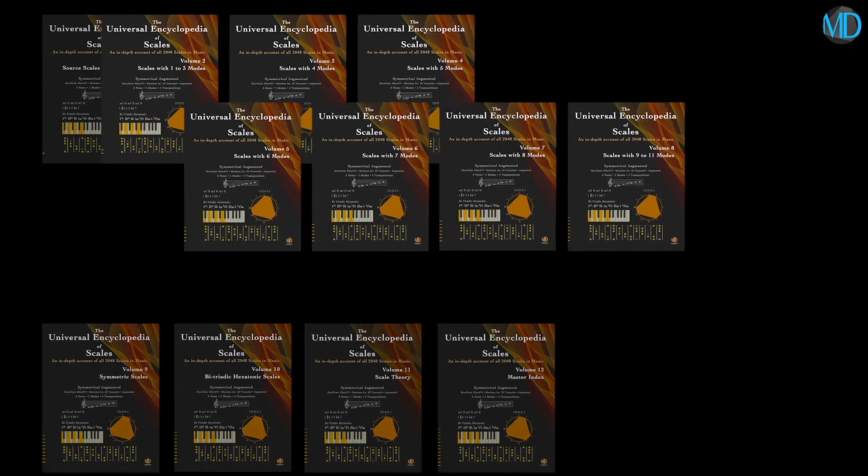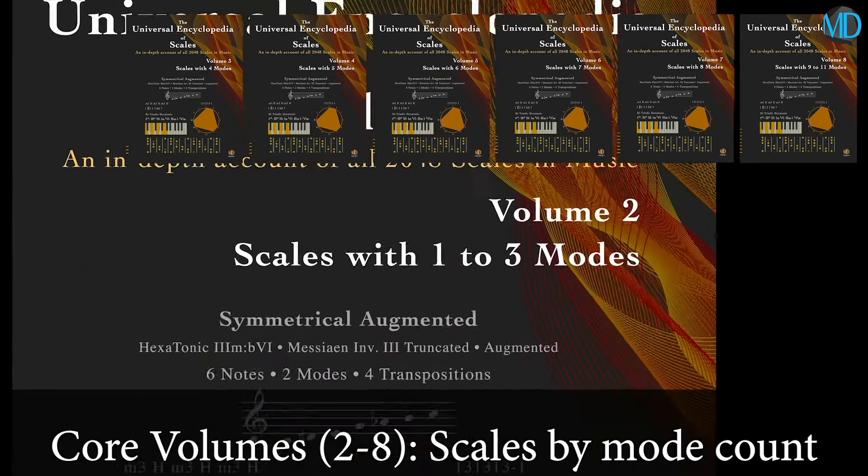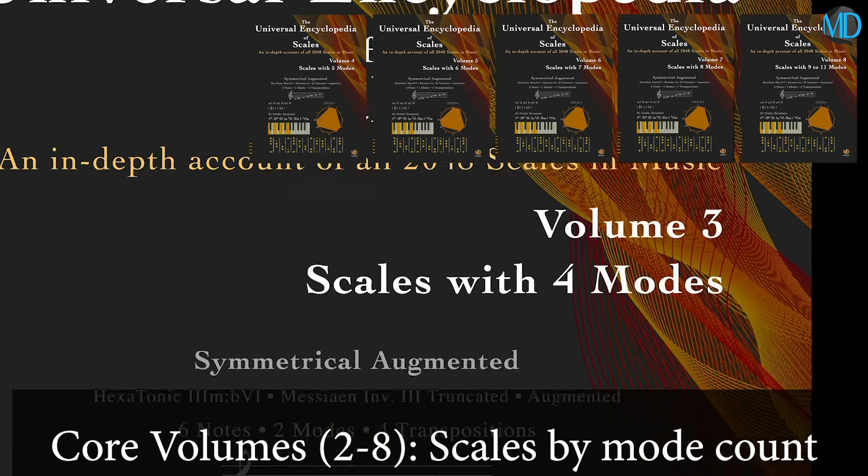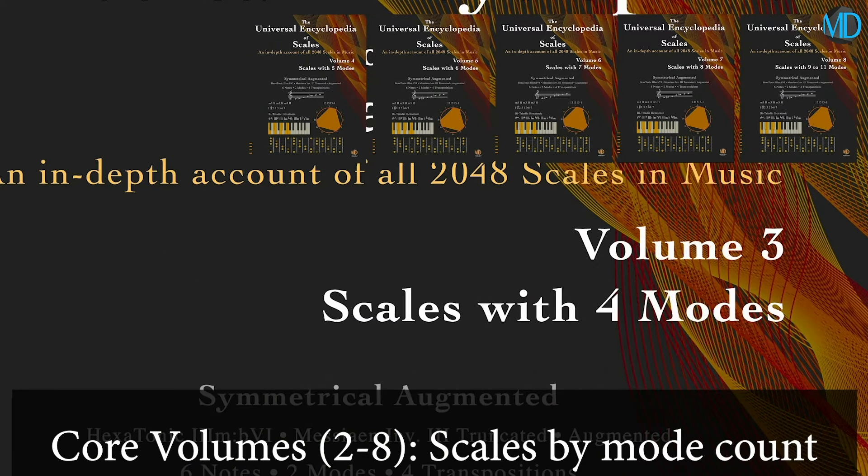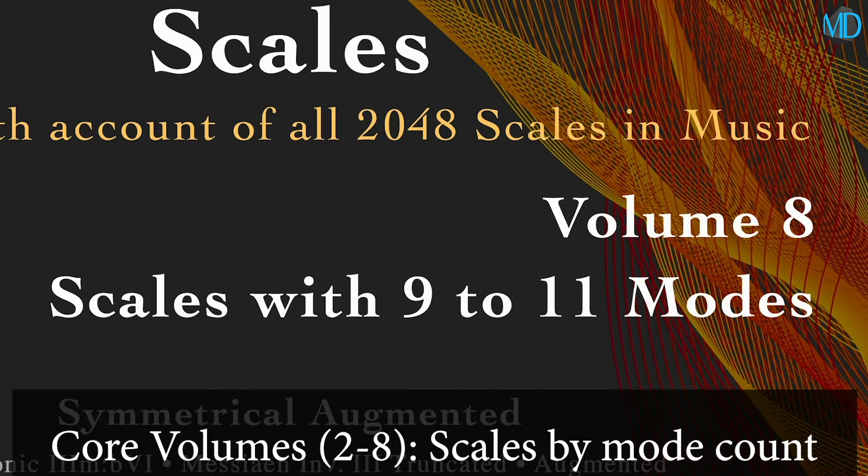Let's start with the core volumes. Volumes 2 through 8 contain all scales grouped by mode count. Volume 2 contains all scales with 1 to 3 modes. Volume 3 contains all scales with 4 modes. And volume 8 contains all scales with 9 to 11 modes.